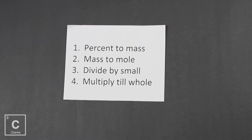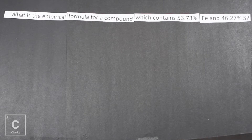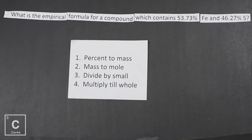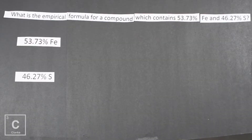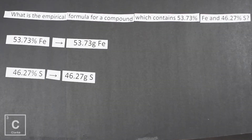Let's work a problem. What is the empirical formula for a compound which contains 53.73% iron and 46.27% sulfur? These percents came from a percent composition problem — I do have a video on that if you need it. Our first step is percent to mass. This actually isn't much of a step; we just rewrite the number with G for grams instead of a percent sign. Step one done.